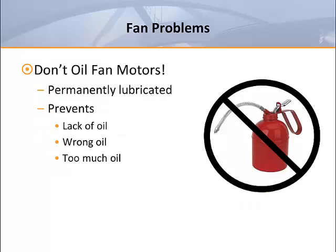Another problem involves oiling — put away those oil cans. At one time, motor manufacturers provided oiling ports and tubes and recommended periodic oiling. About 25 years ago, they eliminated the oiling tubes, capped the oiling ports, and no longer recommended oiling. All terminal unit motors used today are permanently lubricated and should require no oiling. The problem with motor oiling was that it either didn't get done at all, or the wrong oil was used, or too much oil was used. None of the terminal unit motors still in service today should ever need oiling.